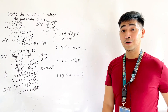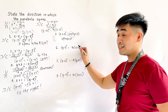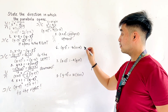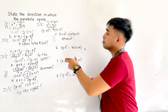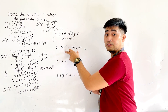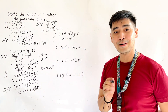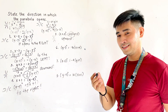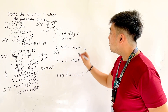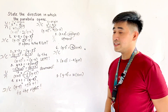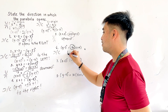For number 6, we have y minus 1 quantity squared is equal to negative 16 times the quantity x plus 4. Since we have y squared, it will open to the left or to the right. But since this is negative 16, the parabola opens to the left.